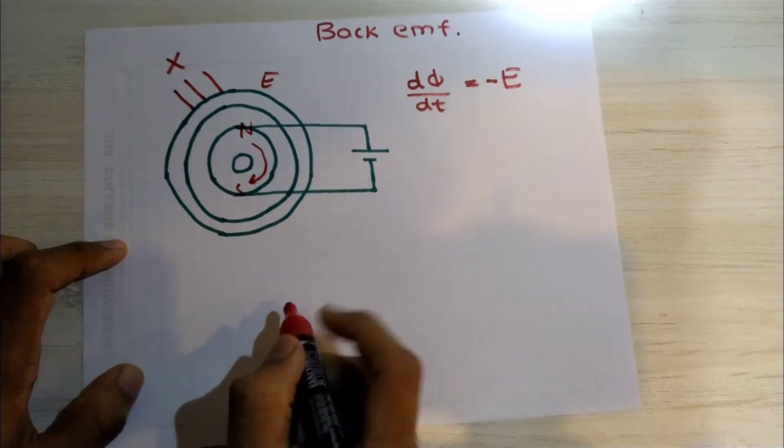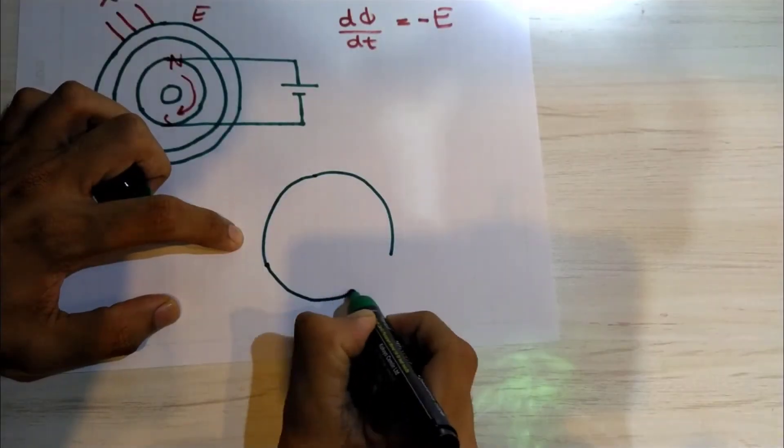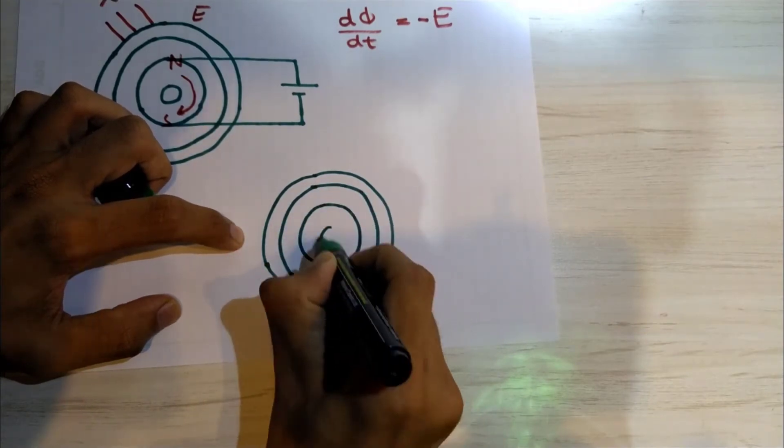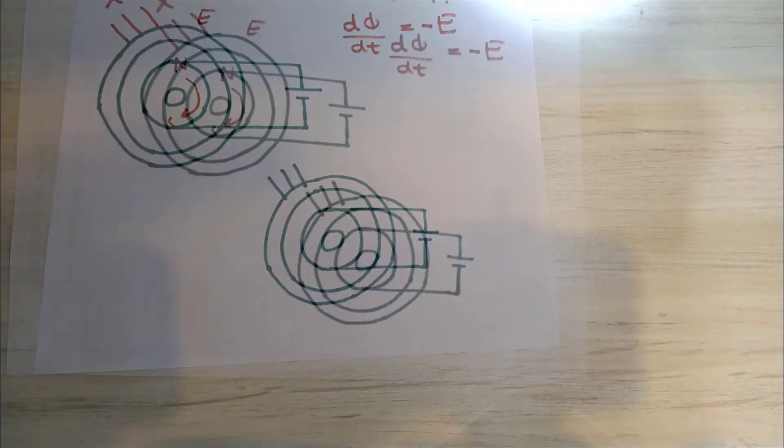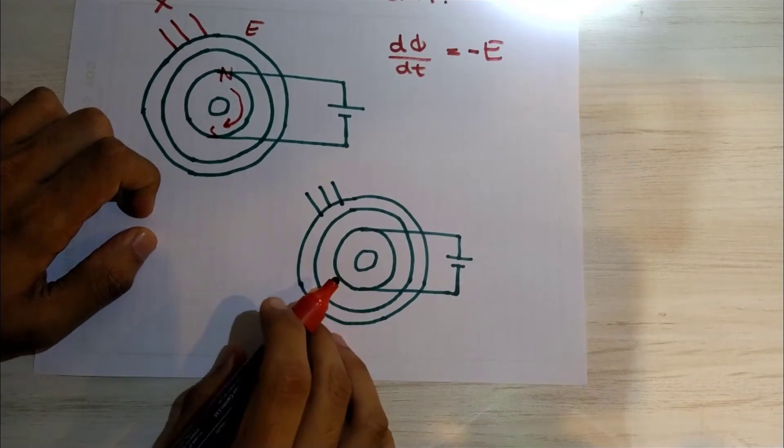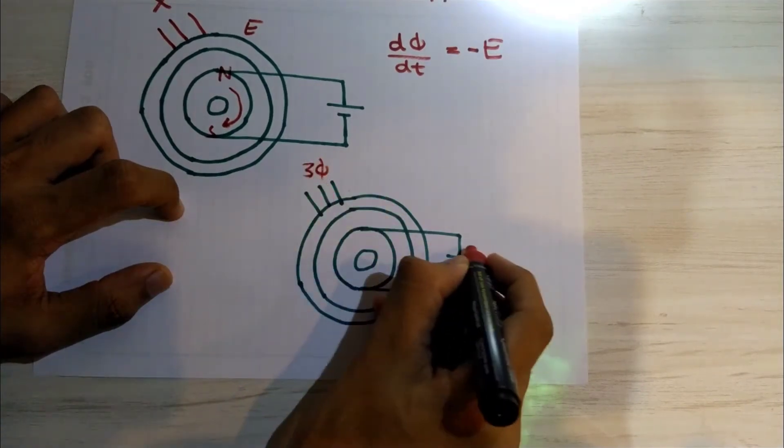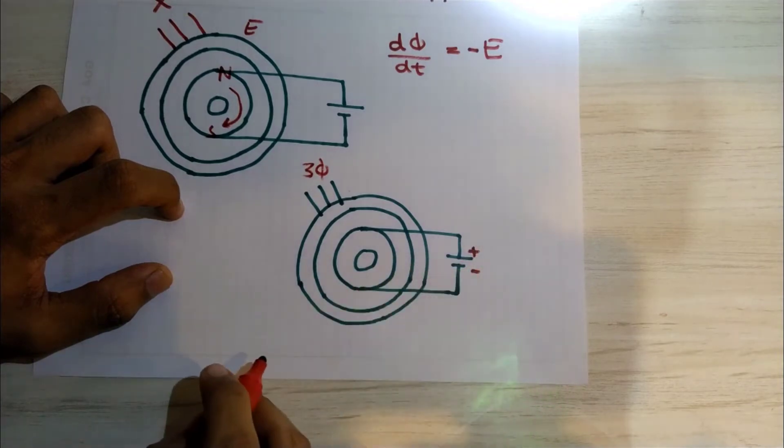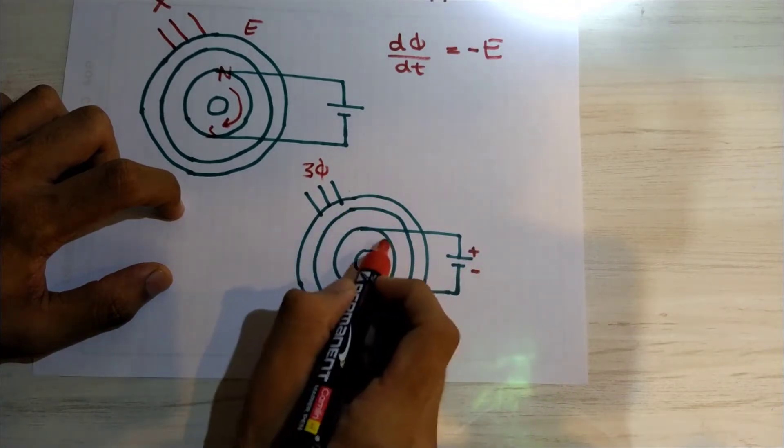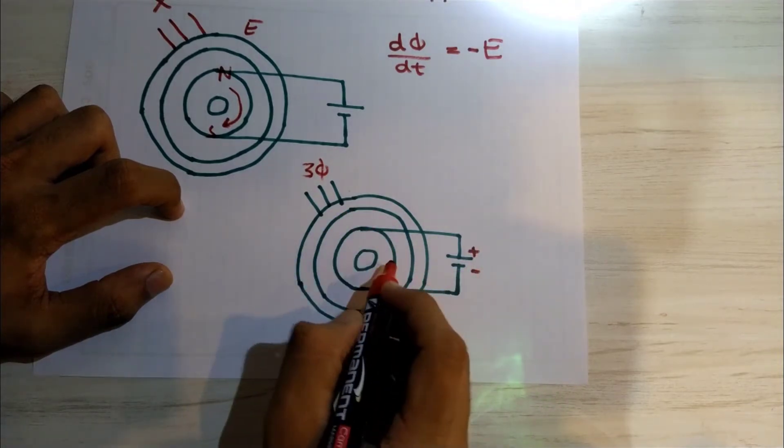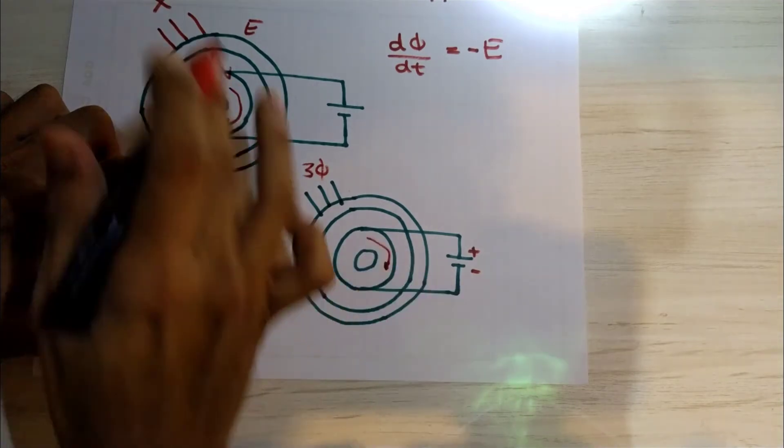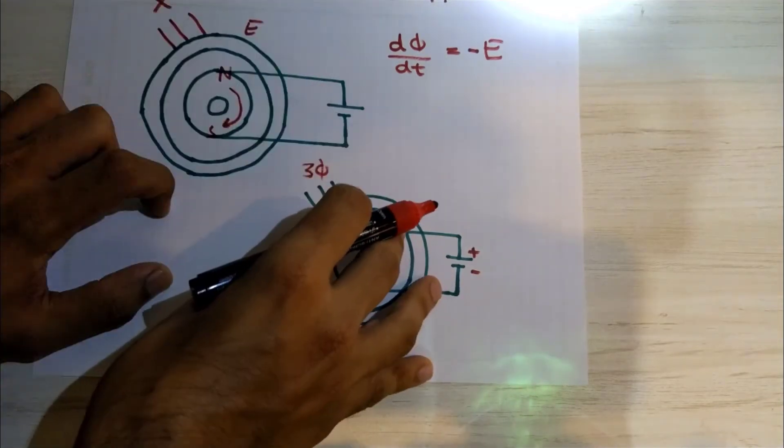Now picture a motor again. This is the synchronous motor where we are giving the three-phase supply and also giving the DC excitation. Because of the rotating magnetic field, the rotor will start moving. Now apply this concept here.